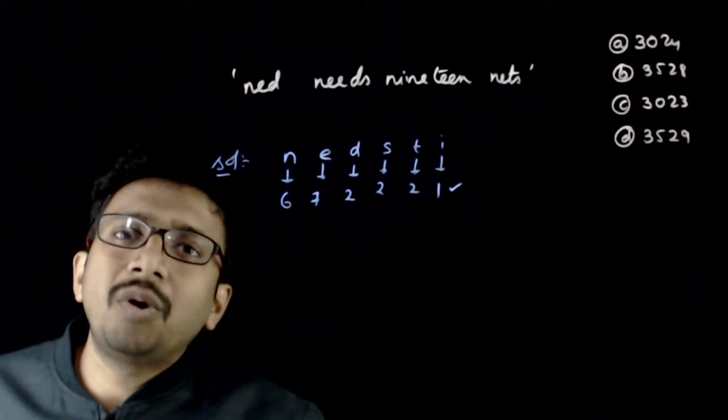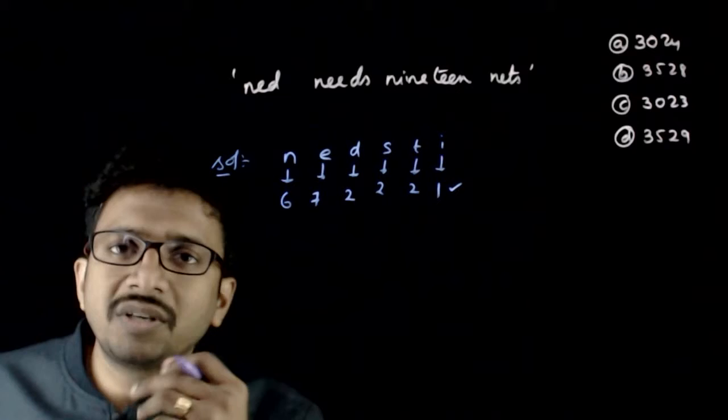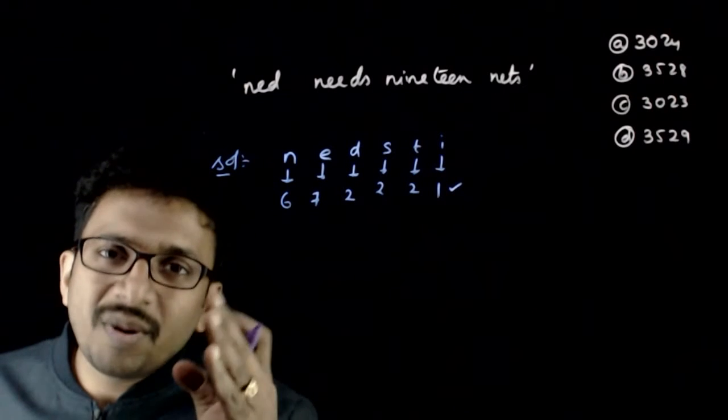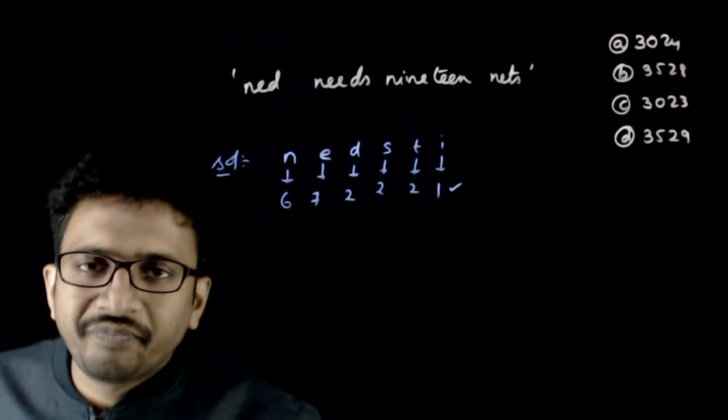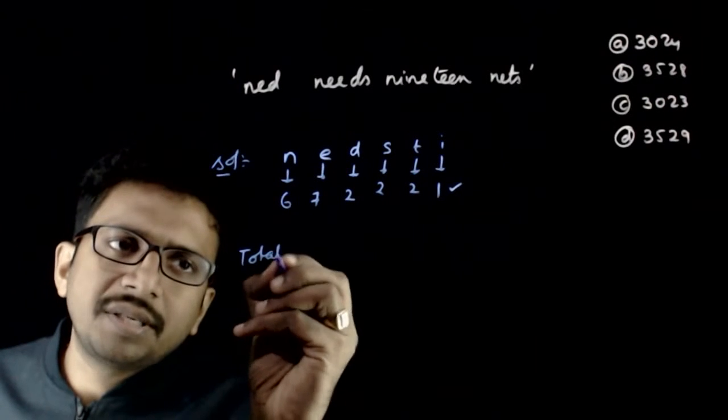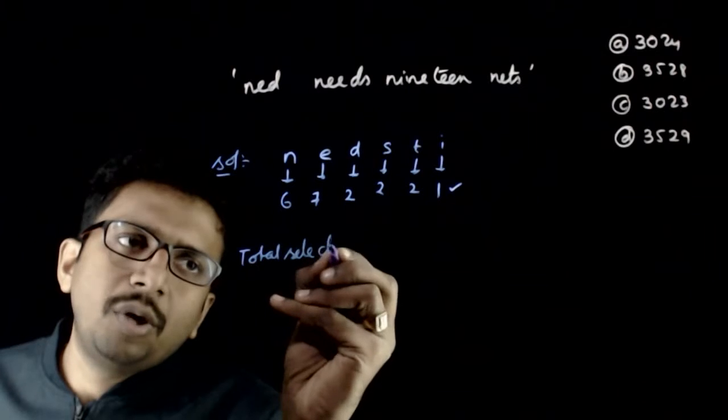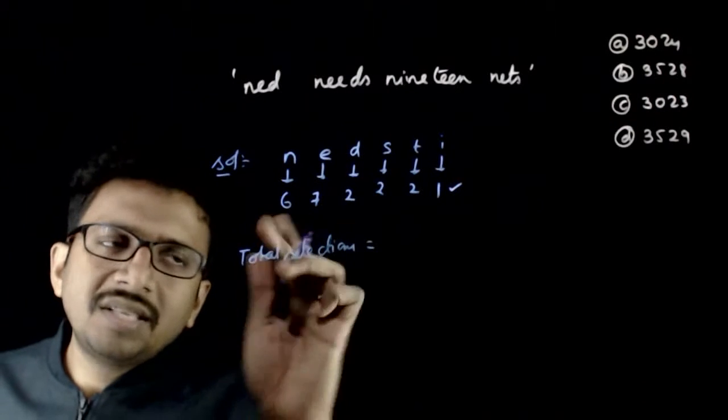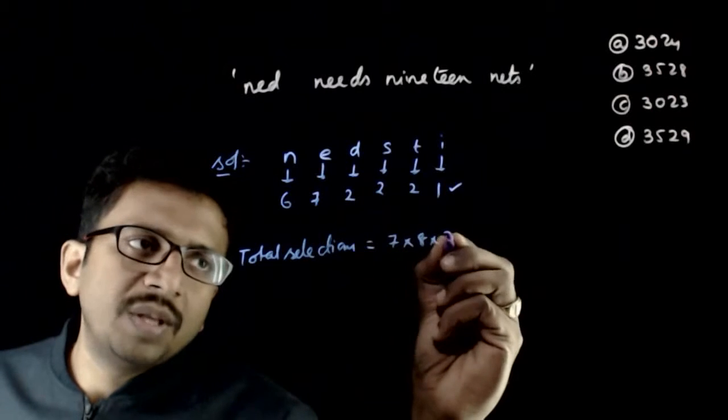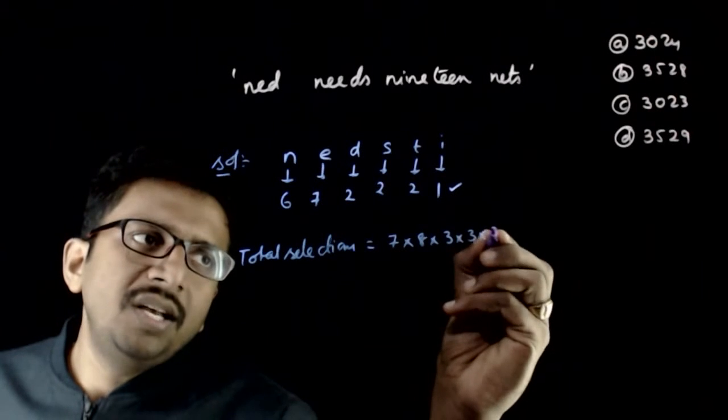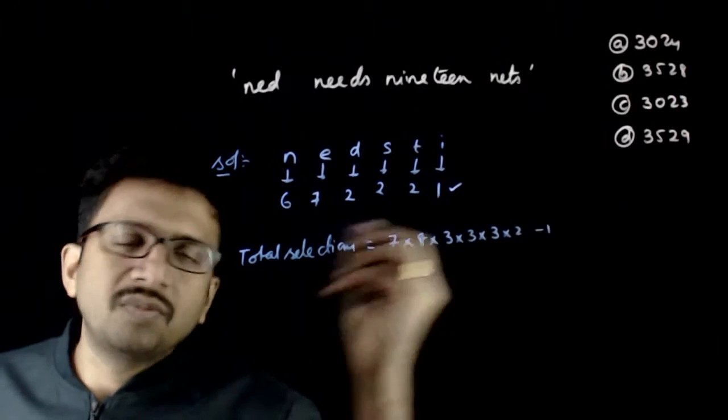So now what is the total number of selections? What is the formula for total number of selections? p plus 1 into q plus 1 into r plus 1 and so on minus 1. So total selections is 6 plus 1, 7 into 7 plus 1, 8 into 2 plus 1, 3 into 3 into 3 into 2 minus 1.